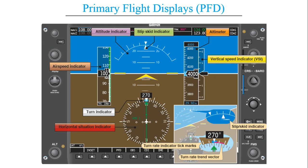Modern aircraft don't have instruments that look like those traditional ones — they have been replaced with digital ones. This is a basic primary flight display — an LCD screen which has all the basic primary flight displays. On it we can see the airspeed indicator, horizontal situation indicator, vertical speed indicator, altimeter, turn rate indicator, and slip and skid indicator. We also need to know about two other indicators: the heading indicator and the attitude indicator.